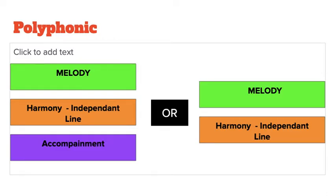We then have polyphonic, which is categorised in two different ways. One way is where there is a melody, a harmony which is an independent line, and then a complement — so three contrasting parts. That's one form of polyphonic. There is also melody and an independent line, which we call harmony. An independent line is what we call polyphonic as well, where two parts are really different and contrasting from each other — that is not an accompaniment.